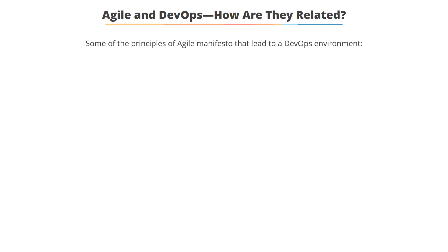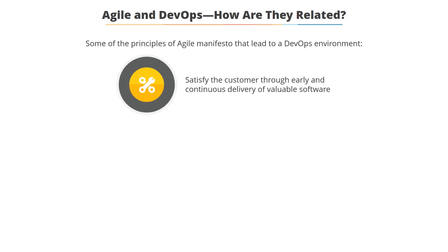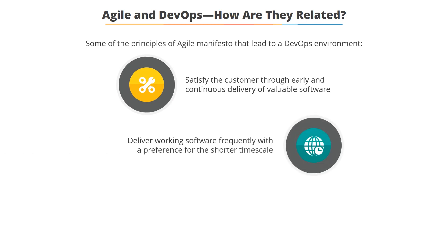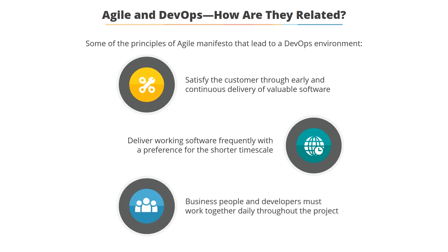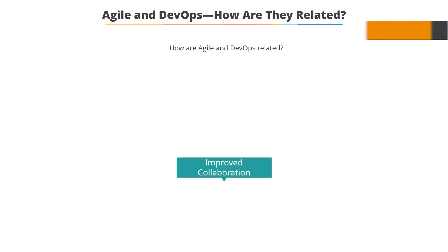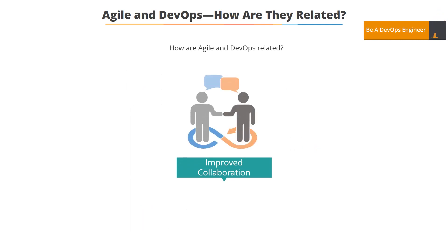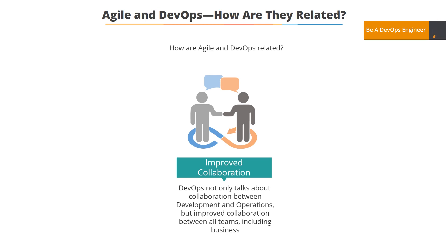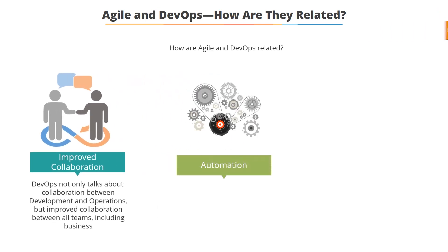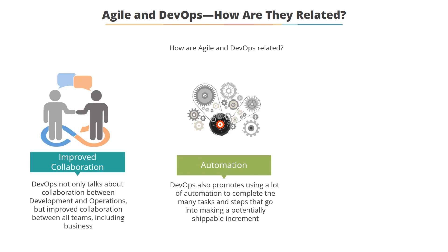Some of the principles of the Agile manifesto that lead to a DevOps environment include: the highest priority being to satisfy the customer through early and continuous delivery of valuable software; delivering working software frequently, from a couple of weeks to a couple of months, with preference for the shorter timescale; and the business people and developers working together daily throughout the project. DevOps extends this so that development and operations work together daily, improving collaboration across all teams including the business.